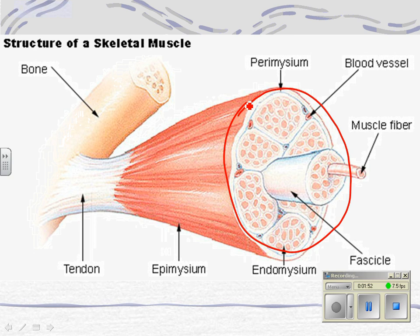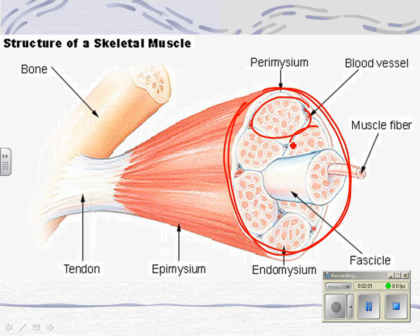It's a bunch of packets with smaller packets inside. The smaller packet is called a fascicle. When you have a muscle twitch, it's a fascicle that's twitching — a whole group of muscle cells. So if you have a twitch in your eye, it's not the whole muscle, just a part of the whole muscle twitching.